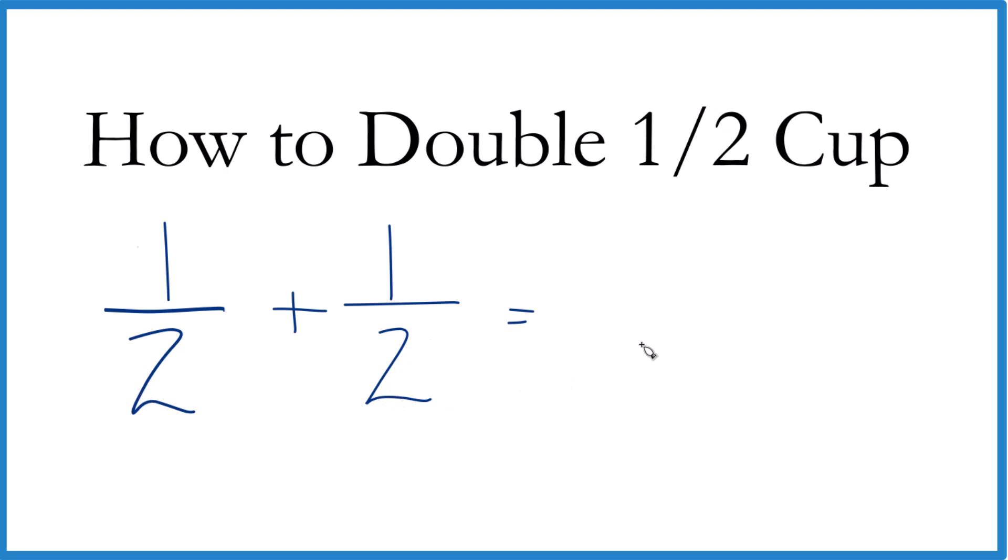Two stays the same across, and then we add the numerators. One plus one is two. And we have the same thing, two over two, which equals one cup. And that's how you do it.